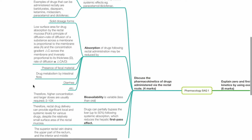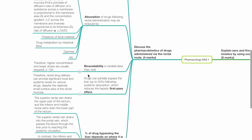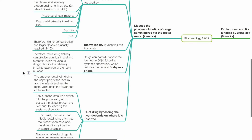Absorption may also be reduced by presence of fecal material, drug metabolism by intestinal flora, and diarrhea. Bioavailability is variable and less than oral; therefore higher concentrations and larger doses are usually required, and may be 2 to 10 times that via the oral route.